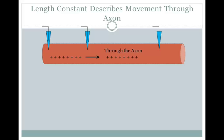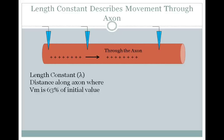Similarly, we can describe the movement of current through the axon by using the length constant. The length constant, or lambda, is the distance along the axon where the membrane voltage is 63% of the initial value.